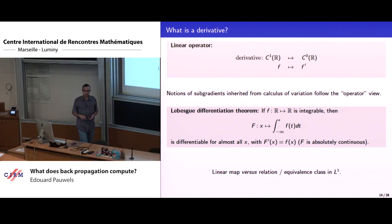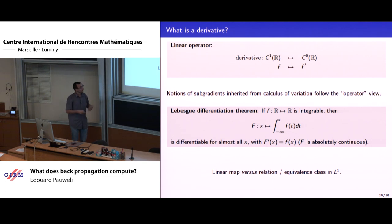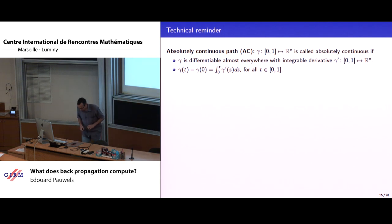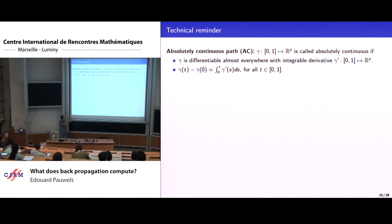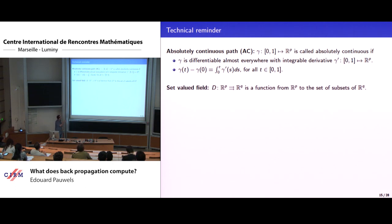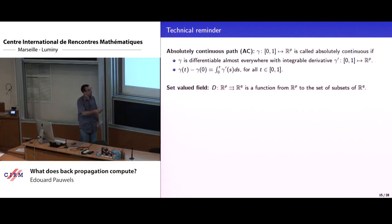Now I need some technical material. An absolutely continuous path is a path in R^p that is differentiable almost everywhere, has an integrable derivative, and is the primitive of its velocity field. A set-valued field is a function whose output is not a vector but a subset of a Euclidean space — everything here will be finite-dimensional on Euclidean spaces.